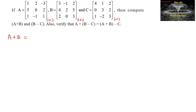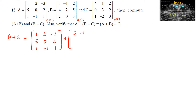Let's find the sum A plus B. We can add matrix A: 1, 2, negative 3, 5, 0, 2, 1, minus 1, and 1, plus matrix B: 3, negative 1, 2, 4, 2, 5, 2, 0, 3.